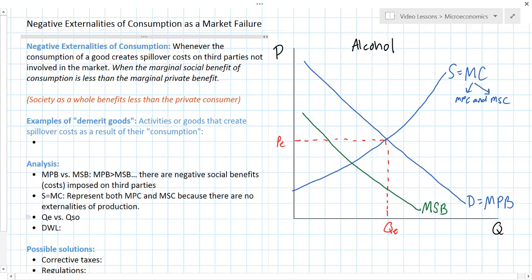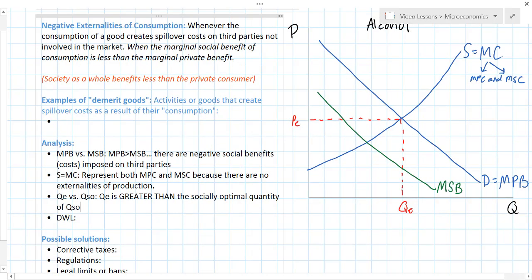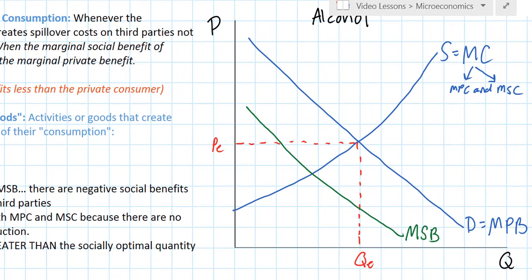The equilibrium quantity in our graph, QE, is greater than the socially optimal quantity, QSO. We need to identify the socially optimal quantity on our graph. Socially optimal output is found at the intersection of the marginal social benefit curve and the marginal social cost curve. So our socially optimal quantity of alcohol is less than the quantity that would be produced and consumed by the free market.